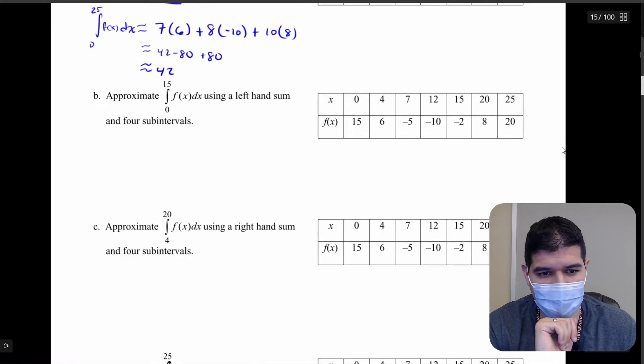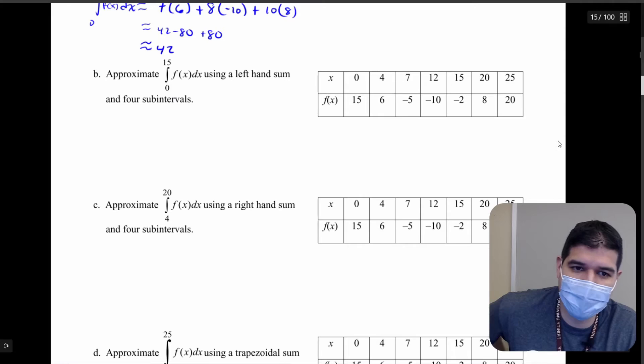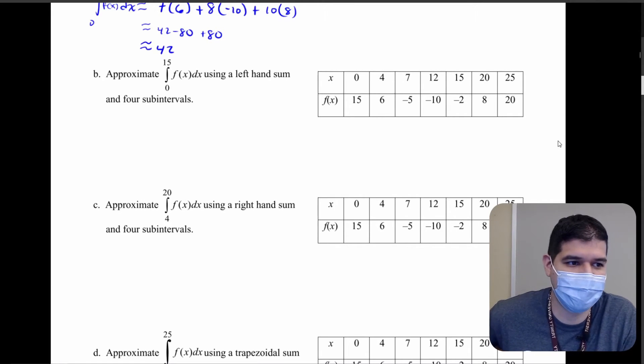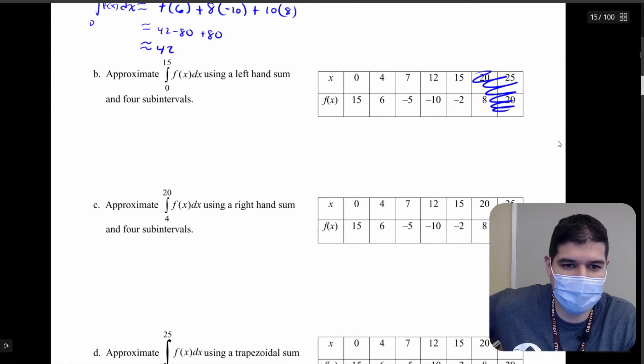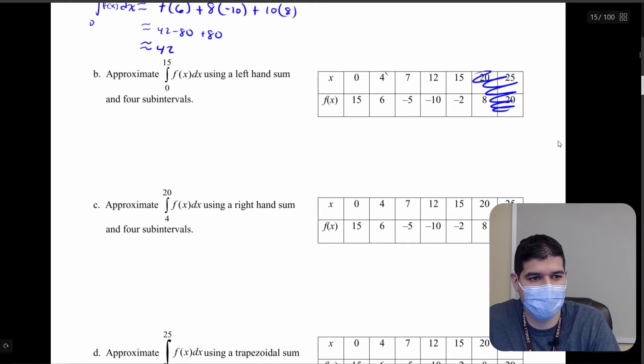Moving on to our second problem we're going to be using a left hand sum and make sure that you do read this properly. This is going from 0 to 15 and we're going to be using four subintervals. So my first interval is going to be 0 to 4, and then I get 4 to 7, and then I get 7 to 12, and then I get 12 to 15.